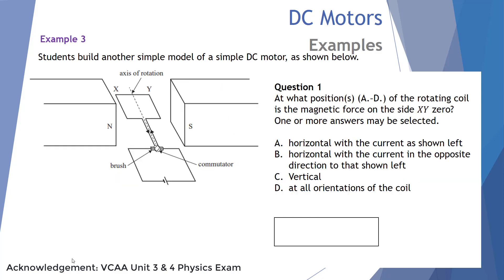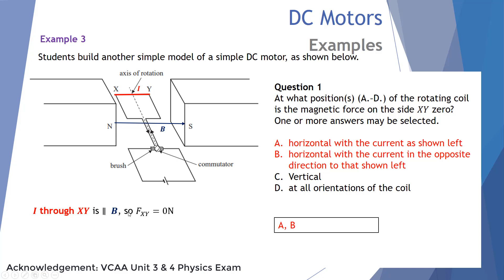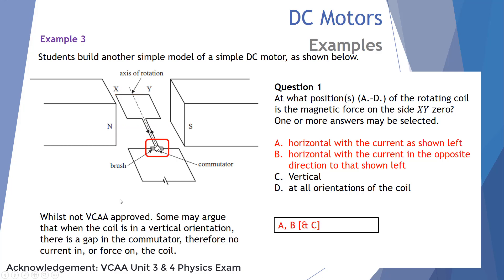Example 3, Question 1: At what positions is the magnetic force on side XY zero? The current through XY is parallel to the magnetic field B, so the force is zero. No matter if the current travels to the right or left, it runs parallel to the field between the two magnetic poles. So positions A and B (both horizontal orientations) are valid answers. Some may also argue option C (vertical), since there is a gap in the split ring commutator at that position whereby no current flows, and therefore no force.